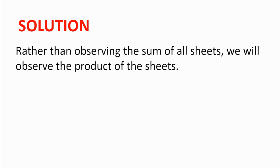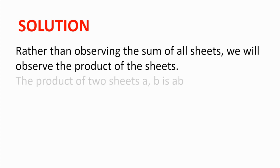Solution. Rather than observing the sum of all the numbers on all the sheets, we'll begin by observing the product of all the numbers on all the sheets. Then if we take two sheets with the numbers A and B written on them, their product will be A multiplied by B.